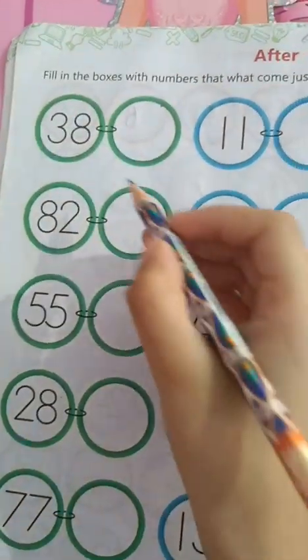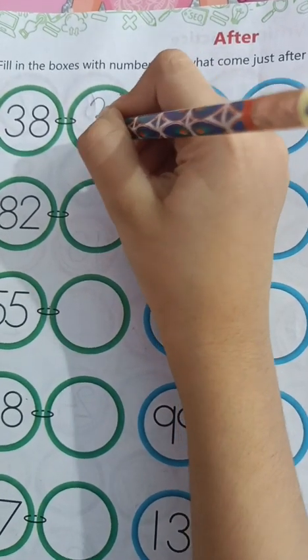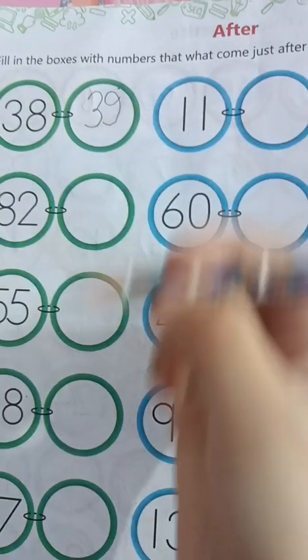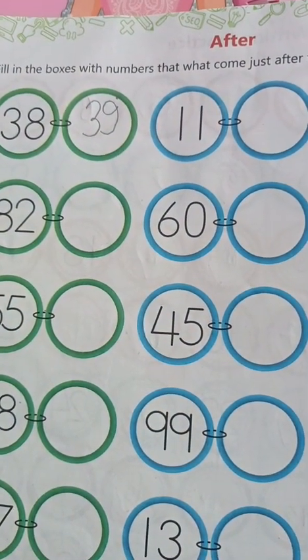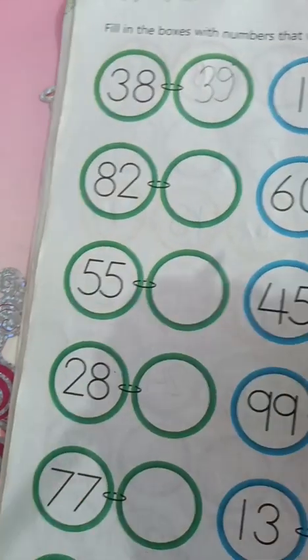Fill in the box. 38, 39. 39 comes after 38. Next exercise.